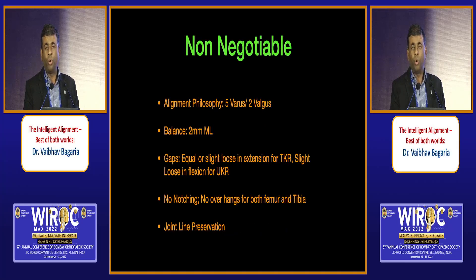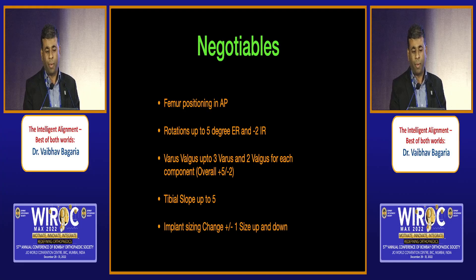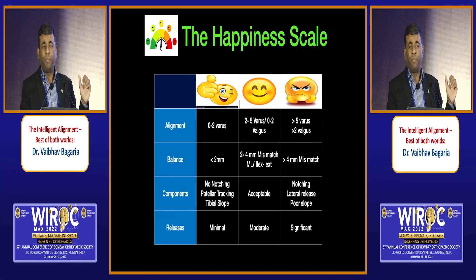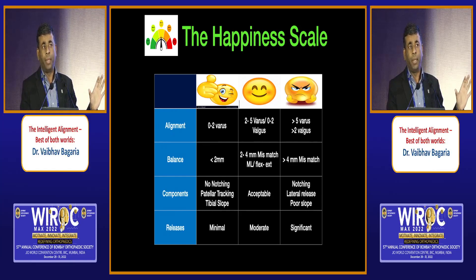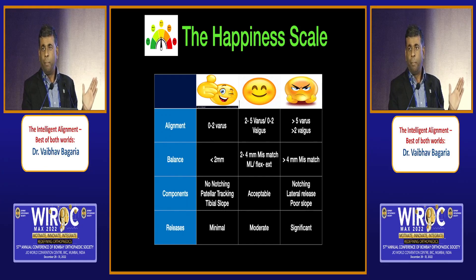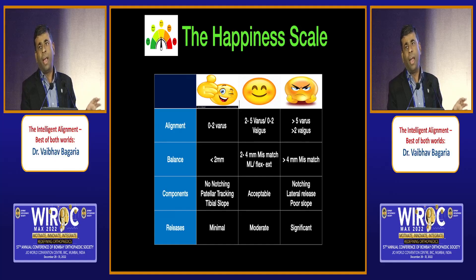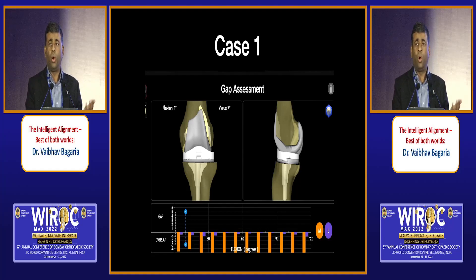Between the negotiable and non-negotiable, I still have 300 permutation combinations to play with — that is intelligent alignment. My happiness score: if at the end of surgery my alignment is between zero to two degrees varus, my balance is less than two millimeters, components are adequately aligned and positioned, and I've done minimal release — I'm happiest. I'm okay if I've accepted some alignment variation and some medial-lateral gap opening with moderate release. I'm unhappy if I've achieved neither my alignment nor component positioning and had to do significant release. The happiest patients will be in the first group, the second will do reasonably well, and the third will do worst.